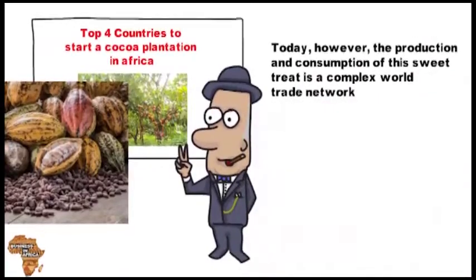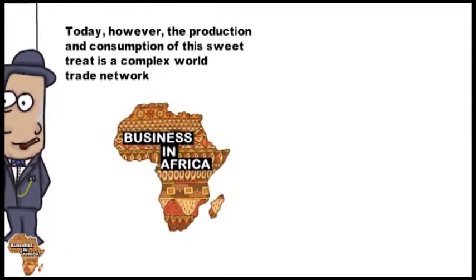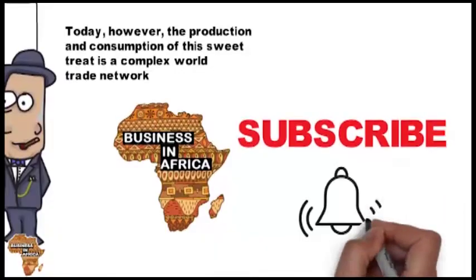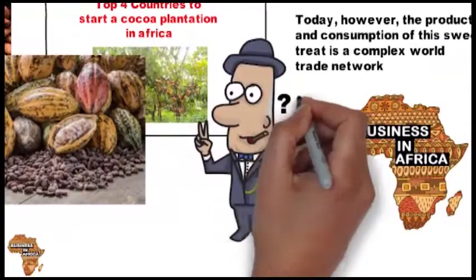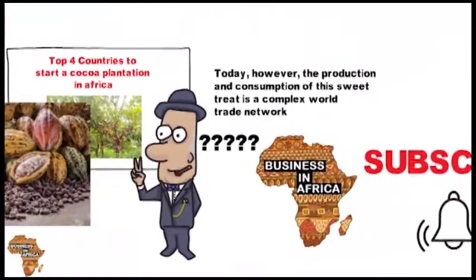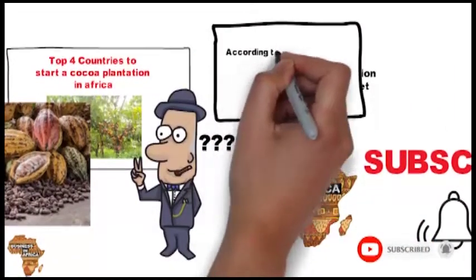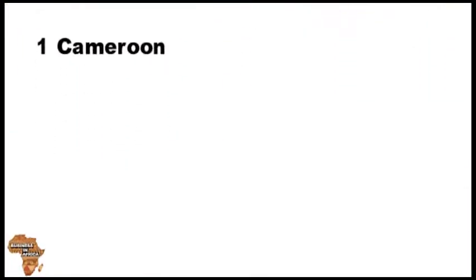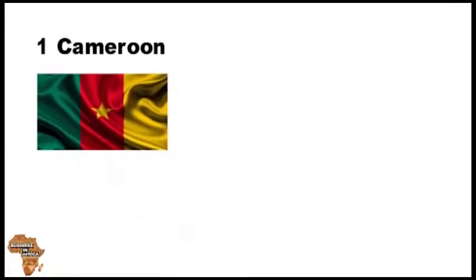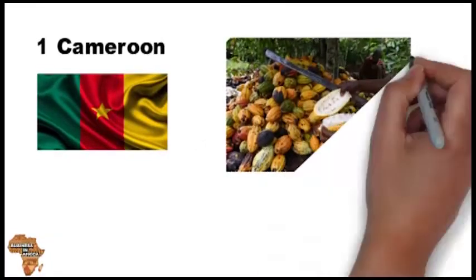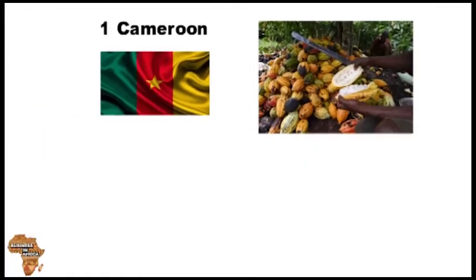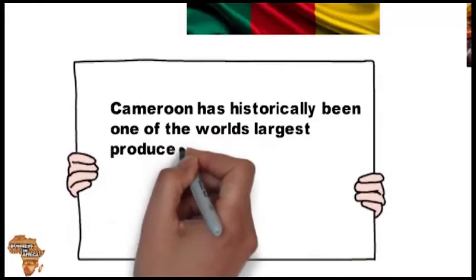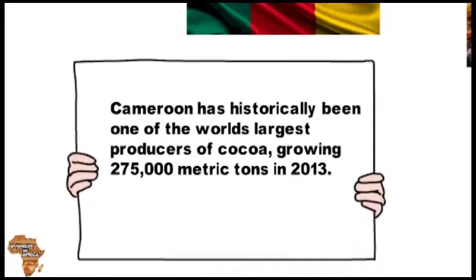Chocolate is made from cocoa beans which grow on cocoa trees. Historians believe chocolate consumption originated in pre-Columbian societies of Central America at least five millennia ago. Today, the production and consumption of this sweet treat is a complex worldwide network. Welcome to the Business in Africa YouTube channel. According to the UN Food and Agriculture Organization, these are the top cocoa producers in Africa. Number one: Cameroon. West Africa produces more cocoa than any other world region. Cameroon has historically been one of the world's largest producers, growing 275 metric tons in 2013.